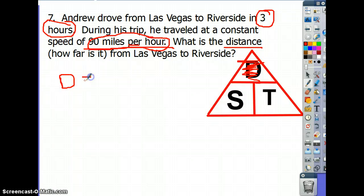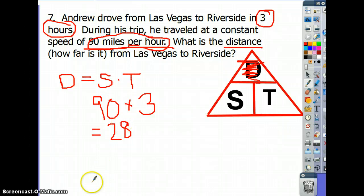And in math, you can use the dot instead of the multiply sign. So speed, his speed was 90 miles per hour times the time, which was 3 hours. 9 times 3 is... No, it's 27. 9 times 3 is not 28. It is 27, of course. And don't forget you're 0. So 90 times 3 would be 270. And look at your units. I ask for the distance, and it's miles. The distance is in miles.